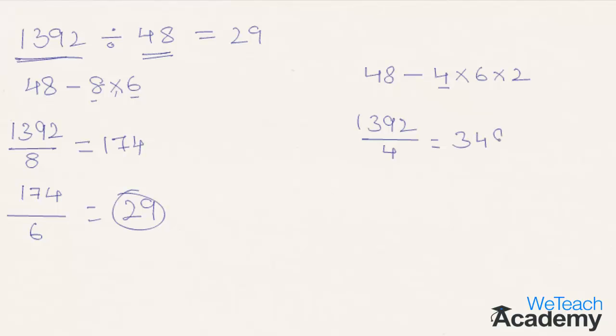Now the result 348 is to be divided with the second factor, that is 6. 348 divided by 6, we get 58. Now 58 is to be divided with the third factor, that is 2. 58 divided by 2, we get 29. Same answer.